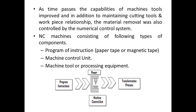The components of the NC system consist of mainly three parts: first is the program of instructions, which was recorded on paper tape or magnetic tape; second is the machine control unit; and the third, which is important, is the transformation process, where we actually perform the tool operations. This is the general relationship among the three components, as shown in the diagram.